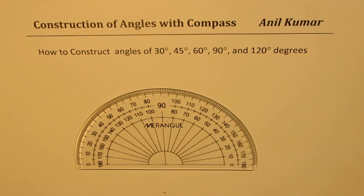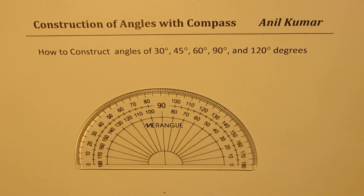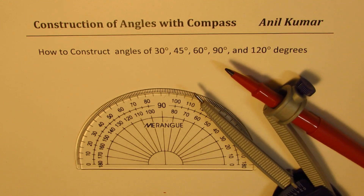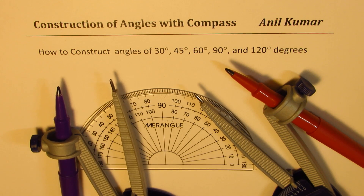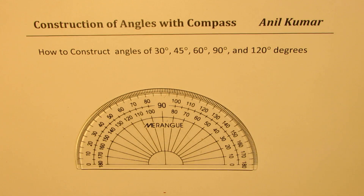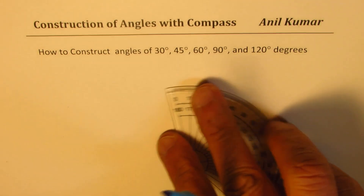I'm Manil Kumar, welcome to my series on construction of angles. We'll see how to construct angles of 30 degrees, 45 degrees, 60 degrees, 90 degrees, and 120 degrees with the help of a compass, not a protractor. We'll use the protractor only to measure, and a compass to construct the angles.